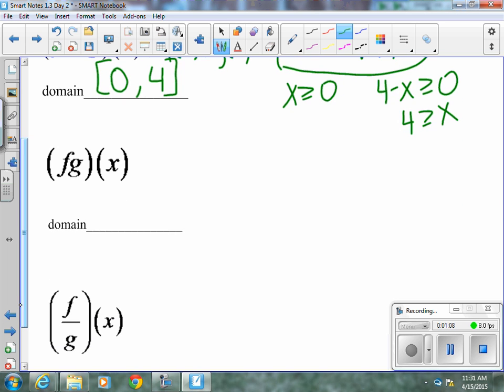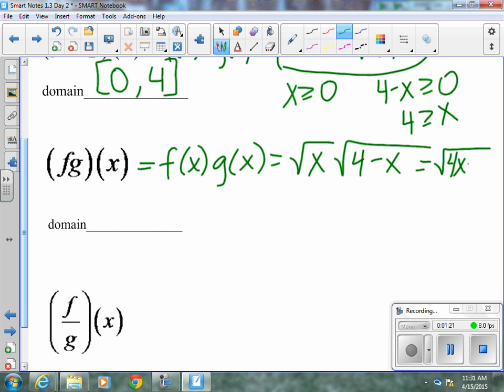f times g of x is the same thing as f of x times g of x. So we get radical x times radical 4 minus x as our function, or radical 4x minus x squared for domain.